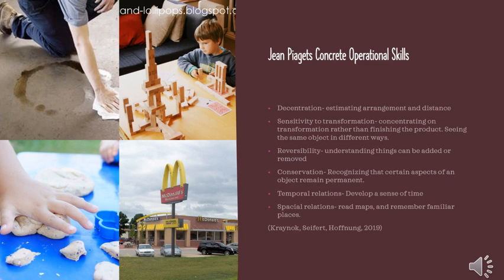For example, they can distinguish between objects, quantity, and special features. They can see the same objects and situations from multiple views and perspectives. They can notice how one thing can change its properties and appearance, yet recognize the continuous aspects of the object or situation.